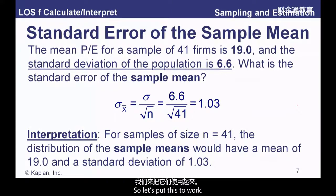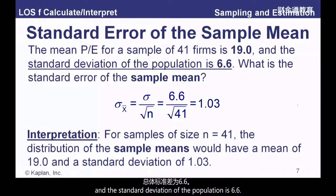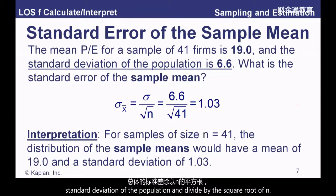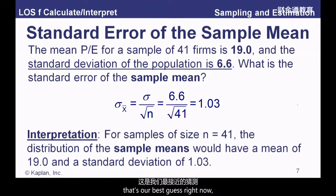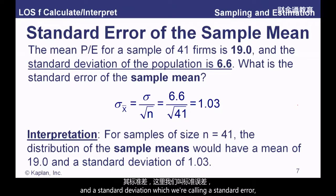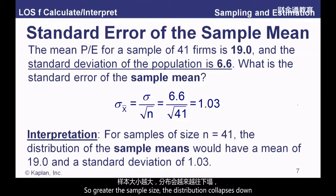A worked example: the mean price-earnings ratio for a sample of 41 firms is 19, and the standard deviation of the population is 6.6. The standard error of the sample mean is just 6.6 divided by the square root of 41, giving 1.03. For samples of size 41, the distribution of sample means has a mean of 19 and a standard error of 1.03. The greater the sample size, the more this distribution collapses tighter around the mean.